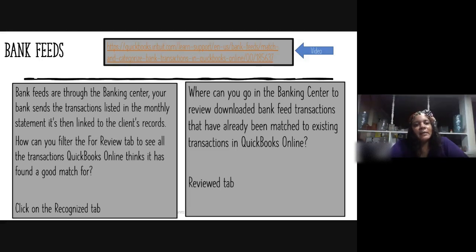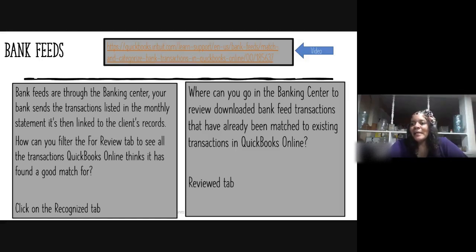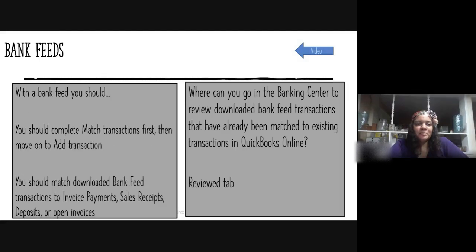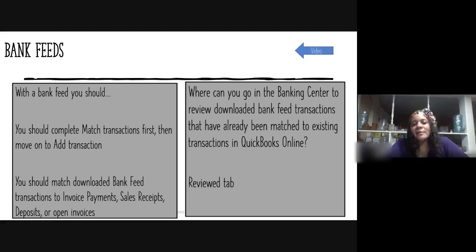How can you filter the For Review tab to see all the transactions QuickBooks Online thinks it has found a good match for? The answer is to click on the Recognized tab. Where can you go in the banking center to review downloaded bank feed transactions that have already been matched to existing transactions in QuickBooks Online? By clicking on the Review tab. With the bank feed, you should complete match transactions first, then move on to your add transactions, and match downloaded bank feed transactions to invoice payments, sales receipts, deposits, or open invoices.